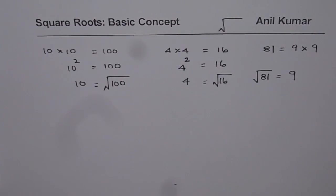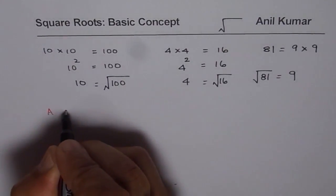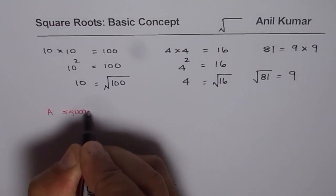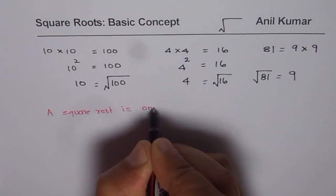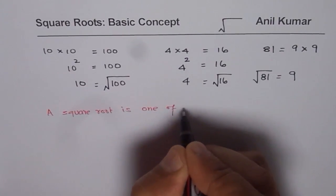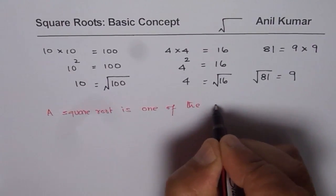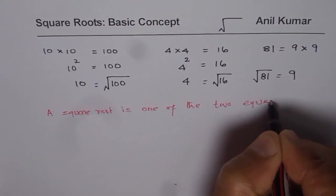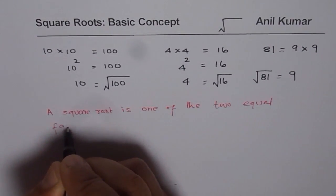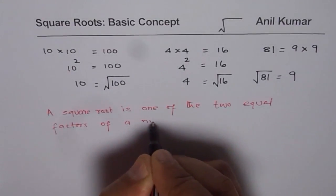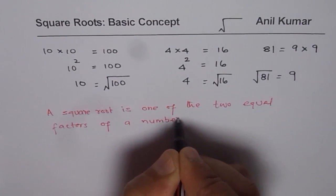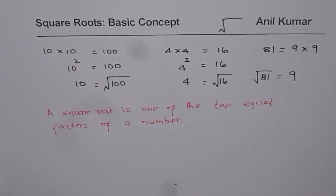So that is the very basic concept of square roots. We can now say that square root is one of the two equal factors of a number. So that is how we can actually get square root.